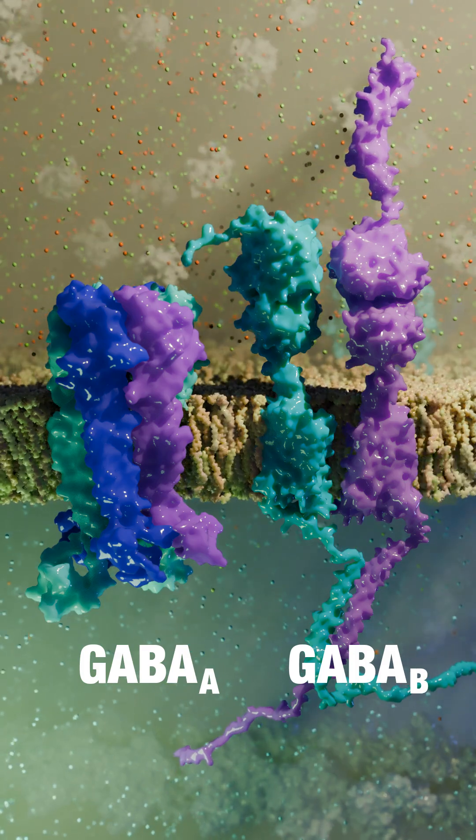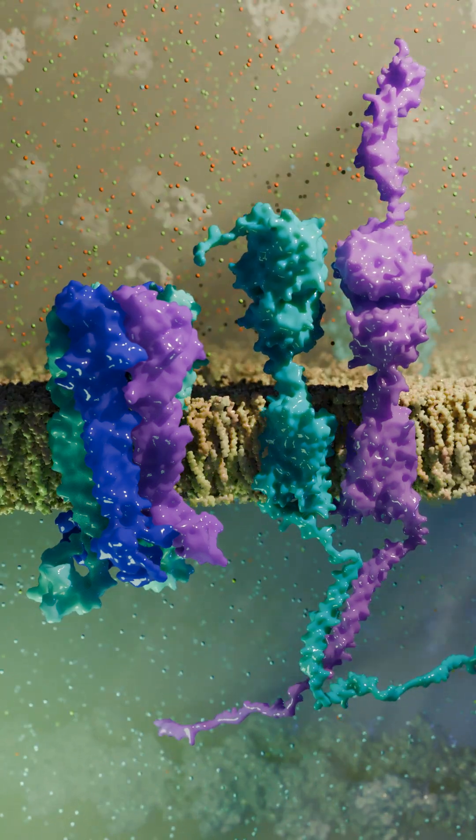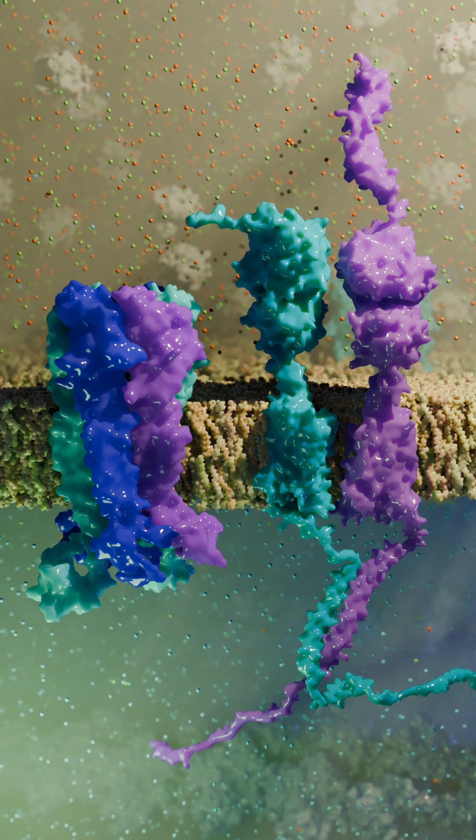GABA-A is a ligand gated ion channel. GABA-B, on the other hand, is a G protein coupled receptor.